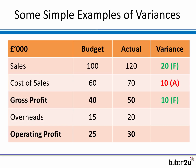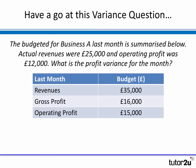Gross profit was £50,000 compared with a budget of £40,000 — a higher profit than expected, so a favorable variance of £10,000. Looking at the overhead line, actual overheads were £20,000 compared with the budget of £15,000 — an adverse variance of £5,000. Therefore, operating profit of £30,000 was higher than the budget of £25,000 — a favorable variance of £5,000.